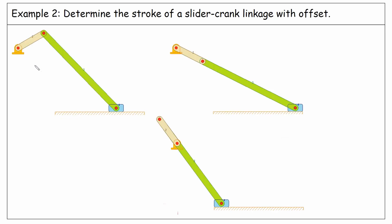In the second example, we have a slider crank mechanism with offset. The crank length is A, the coupler B, and the offset is H. The offset is the distance from the rotation axis of the crank here to the path of the slider here. So from this point perpendicular to this line is H.